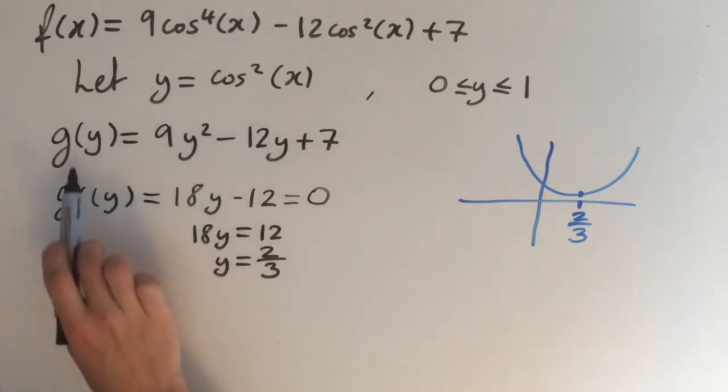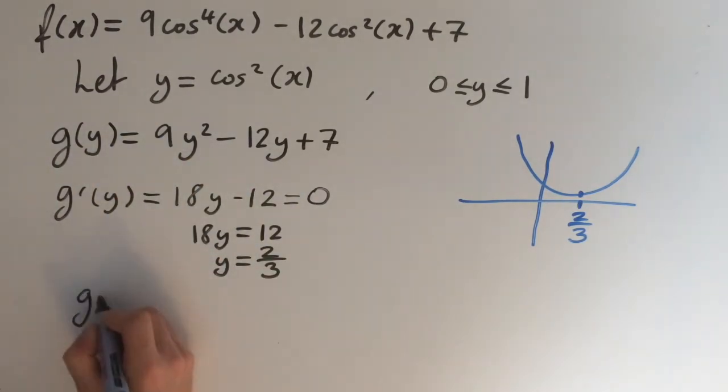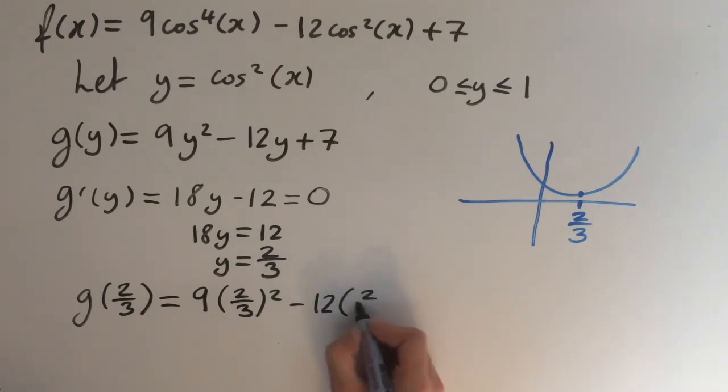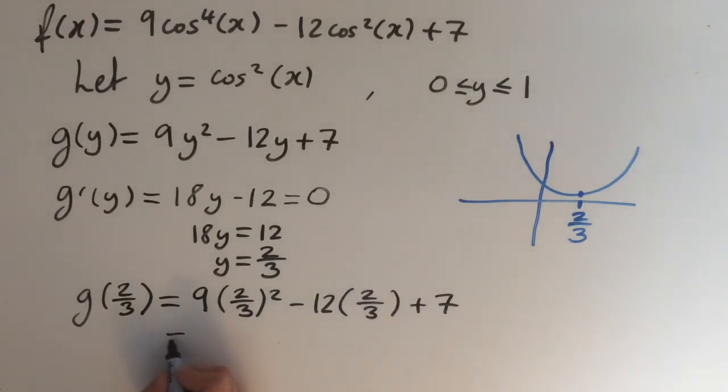The last step is to substitute y equals 2 over 3 back into our function of g. So g of 2 over 3 equals 9 times 2 over 3 squared minus 12 times 2 over 3 plus 7. This simplifies as 4 minus 8 plus 7, which equals 3.